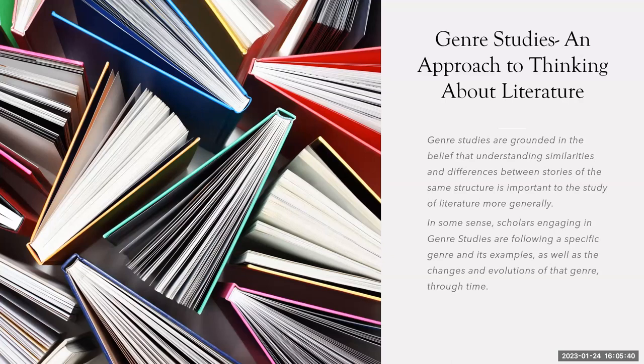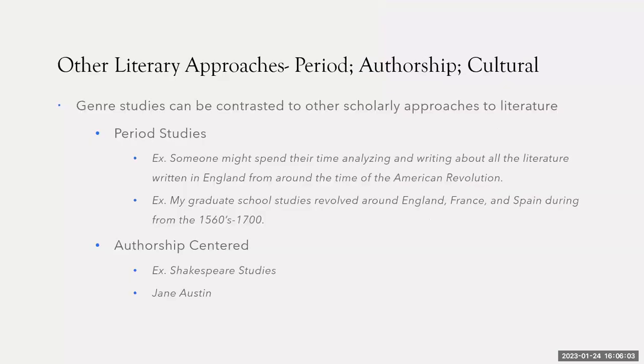When we talk about genre studies with literature, we're talking about studying a specific form of writing over a given amount of time. This is in contrast to another type of studying literature — period studies. For example, somebody might spend their time writing and thinking about literature written in England from around the time of the American Revolution — the late 1700s, maybe just before or just after that.